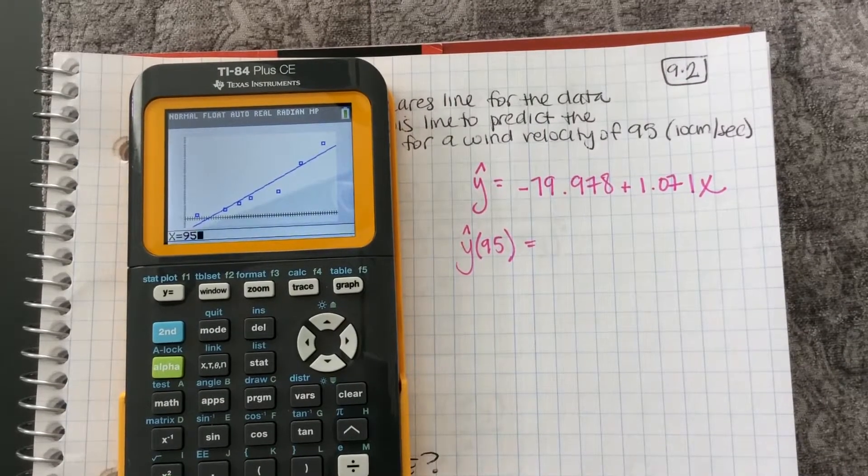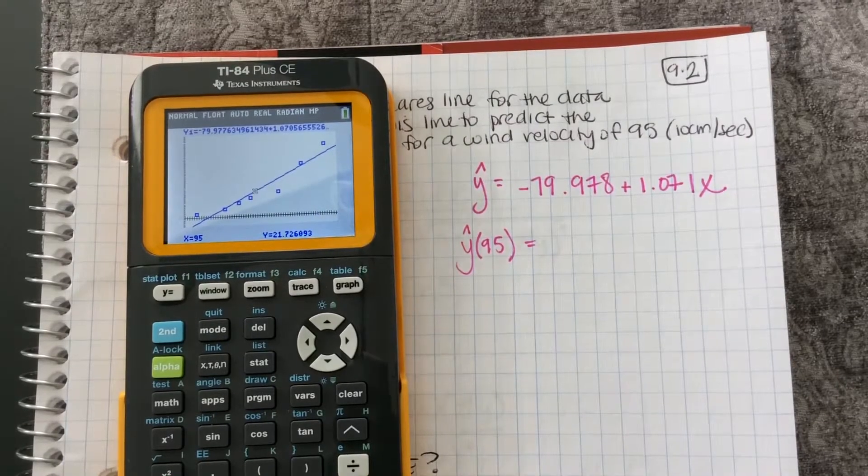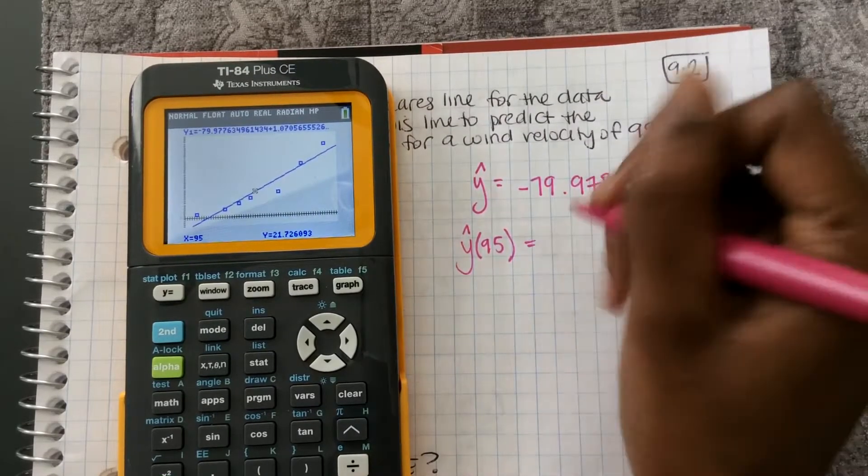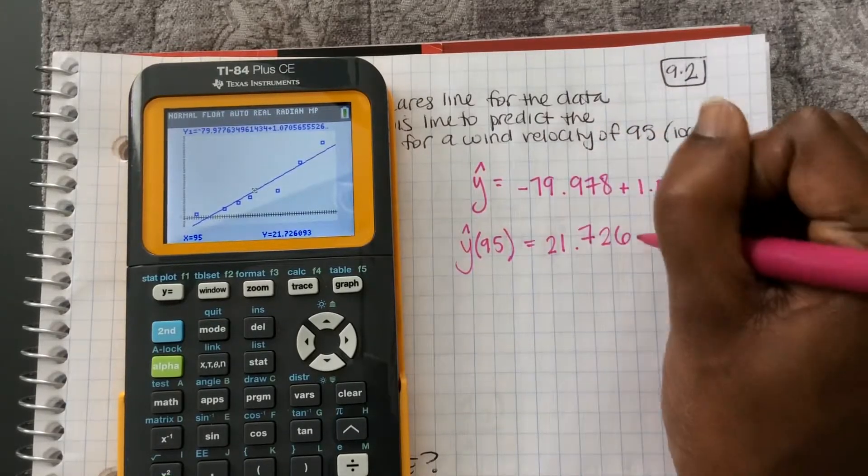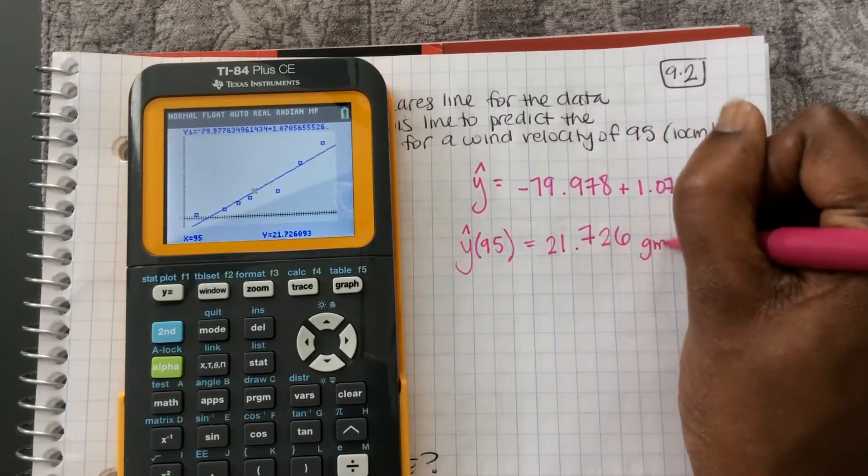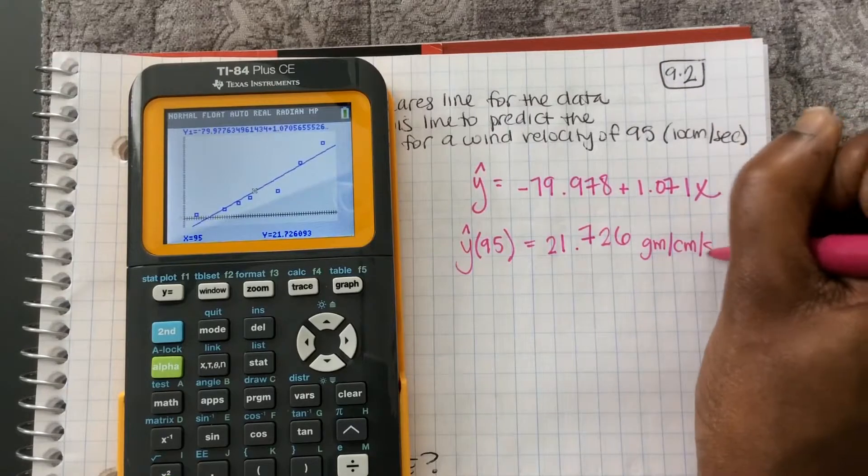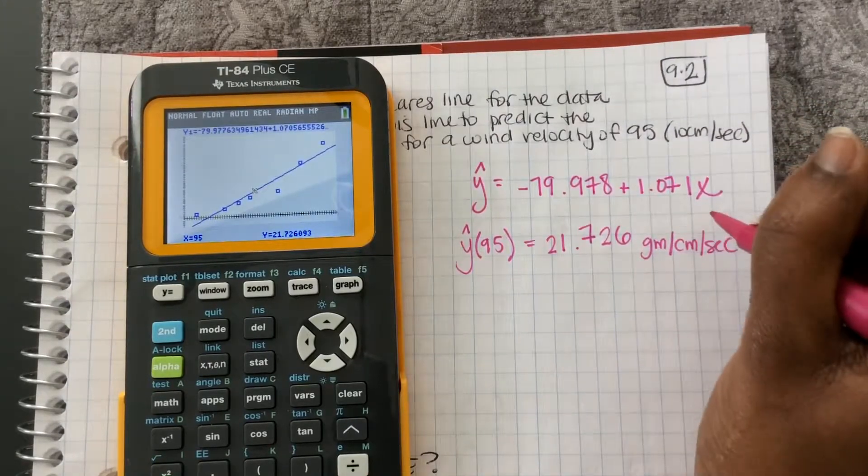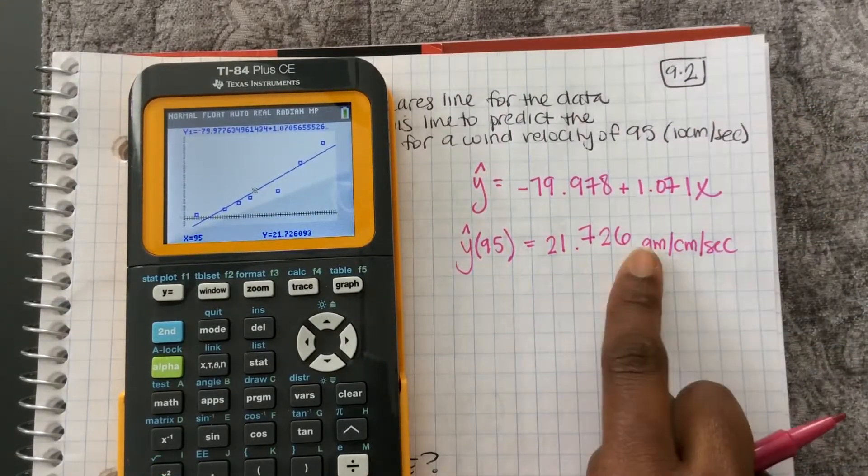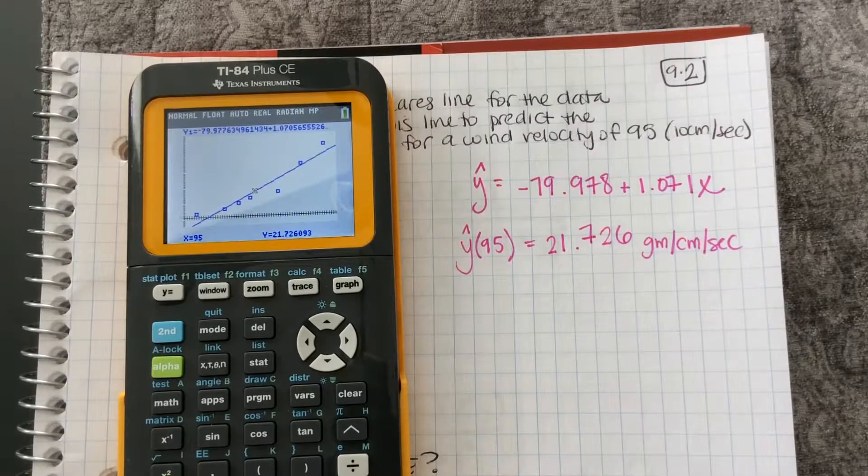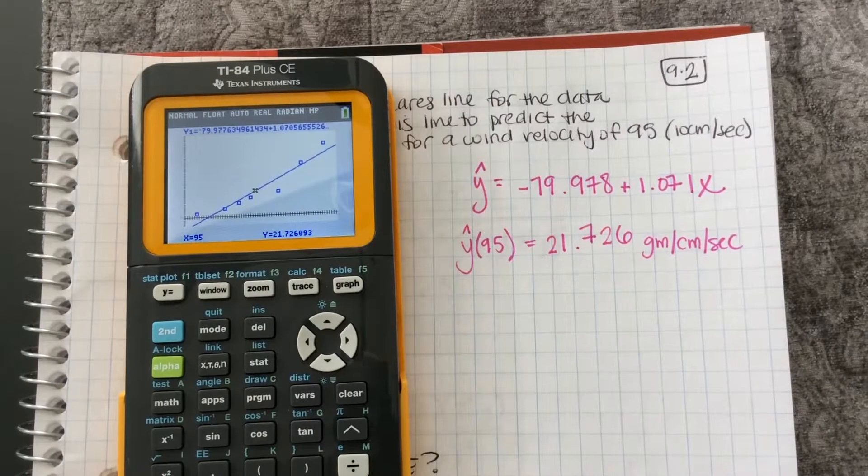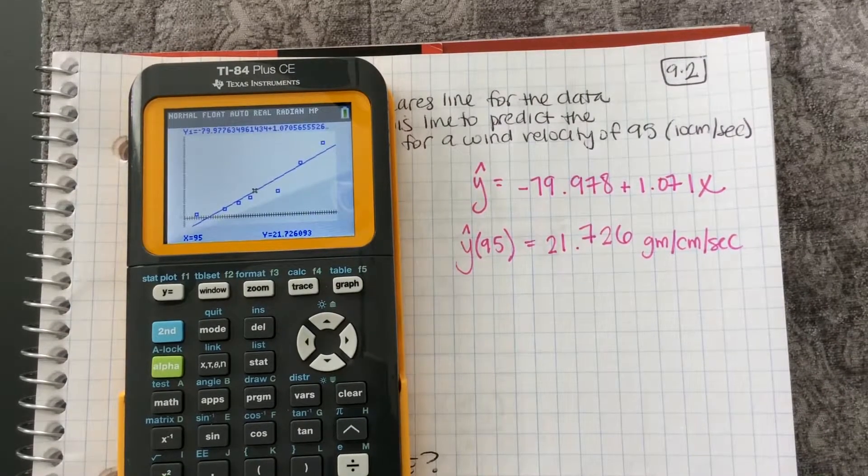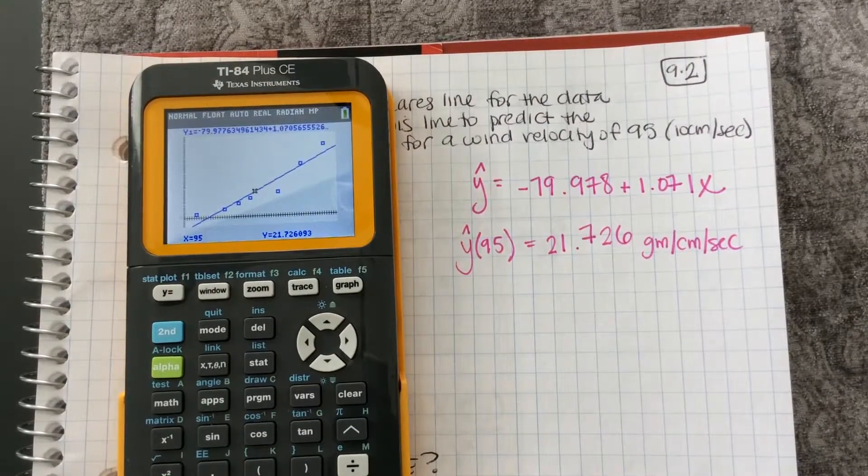So I just simply type it in, press enter. And the y value is 21.726. And I believe the units were gm per cm per second. And that would be the drift rate of my sand using my y hat line to predict. So we would do this some more in class together.